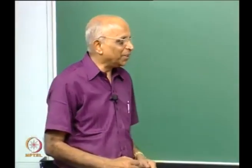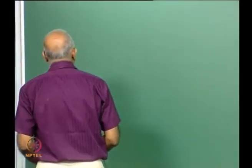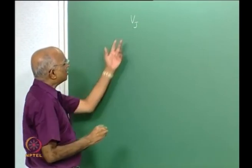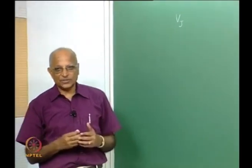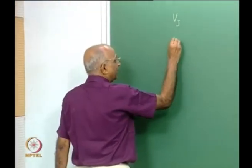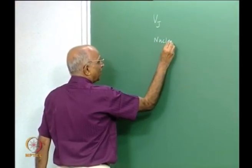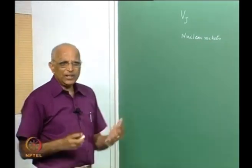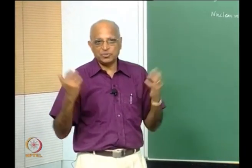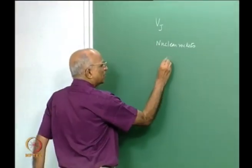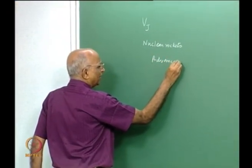Good morning. This will be the concluding lecture in this course. In this class, we said Vj must be high — let us see if there are some limitations to Vj. After looking at this, we will try to see whether there are other possibilities of using nuclear forces for generating thrust, like nuclear rockets, or using light intensity like photons or deep space energy for developing thrust.